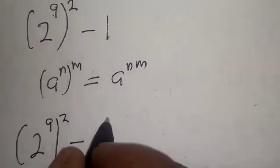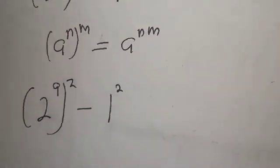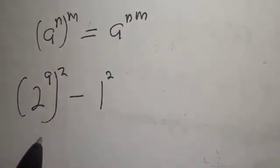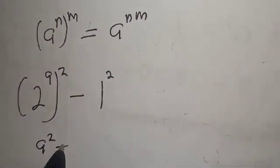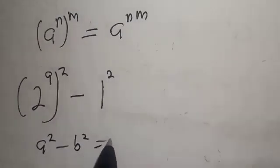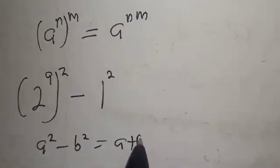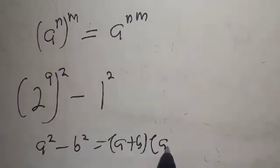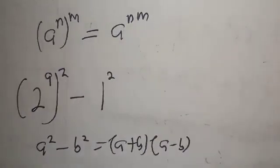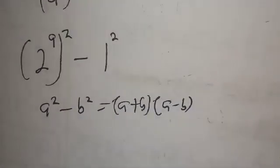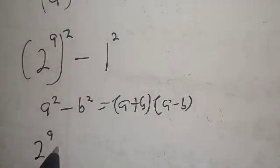So this becomes 2 raised to power 9, squared, minus 1 squared. This is a difference of two squares. The formula a squared minus b squared equals (a + b) multiplied by (a minus b). So we apply that here with a = 2 raised to power 9 and b = 1.